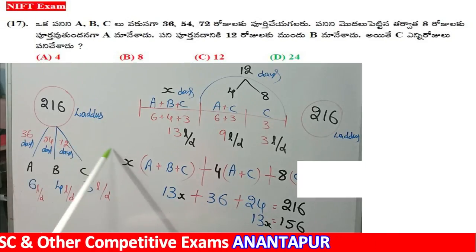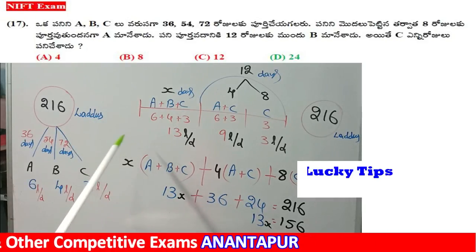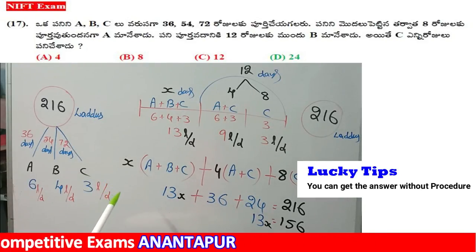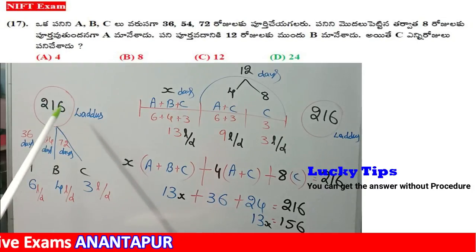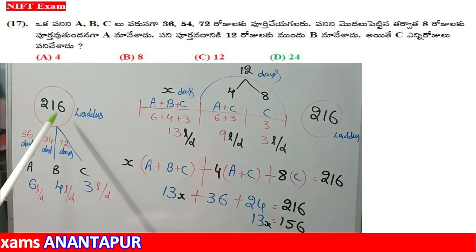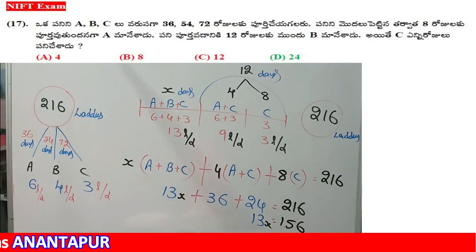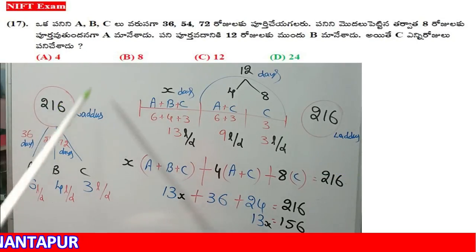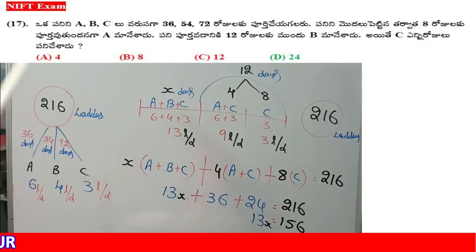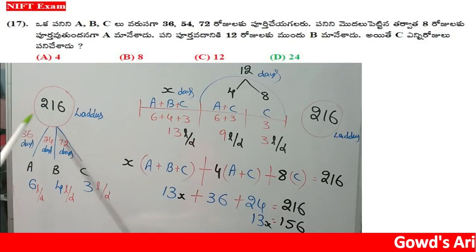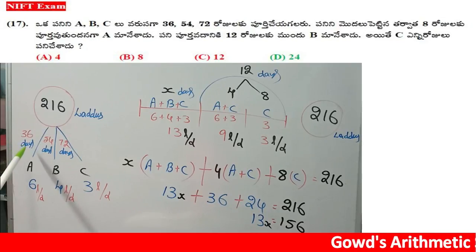This is the first question. LCM — calculate it carefully. If you find the LCM, you will get 216. So A can finish the laddus in 36 days.